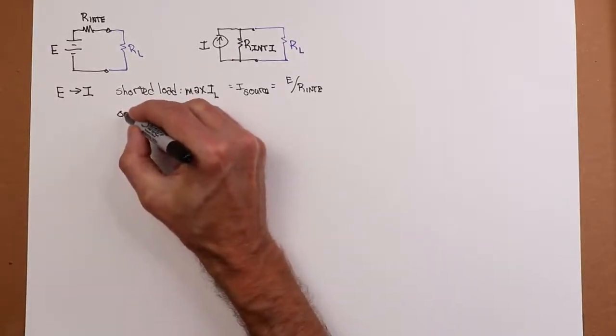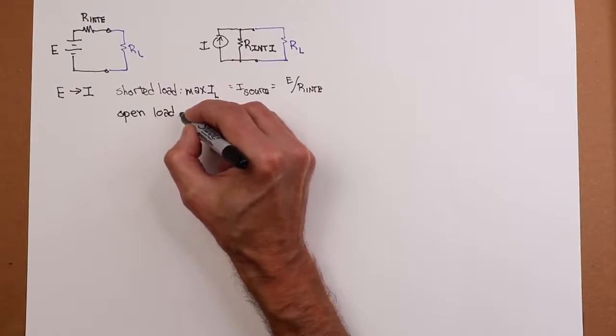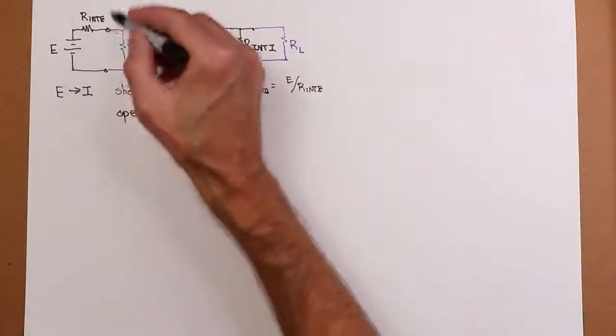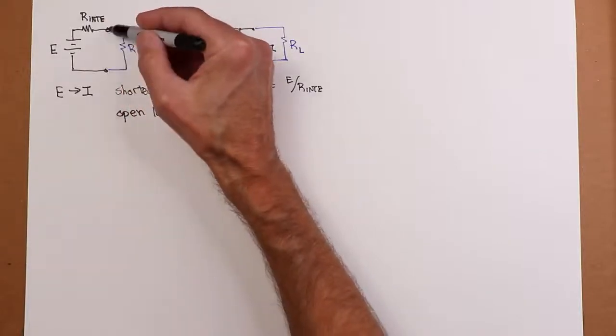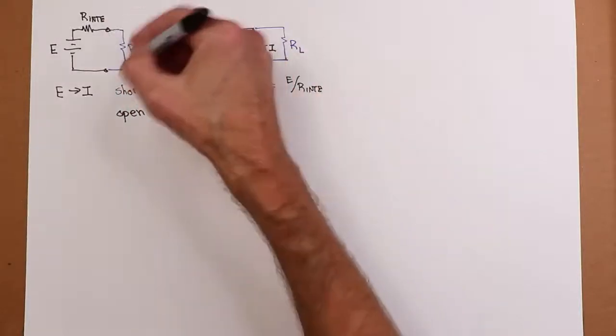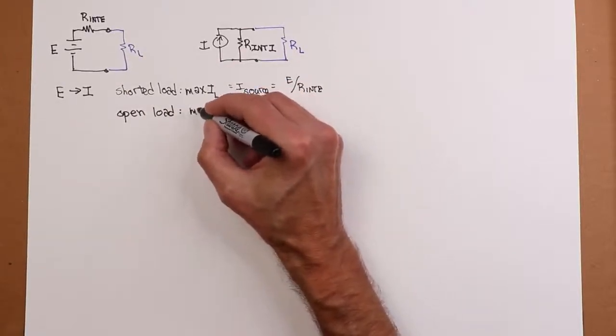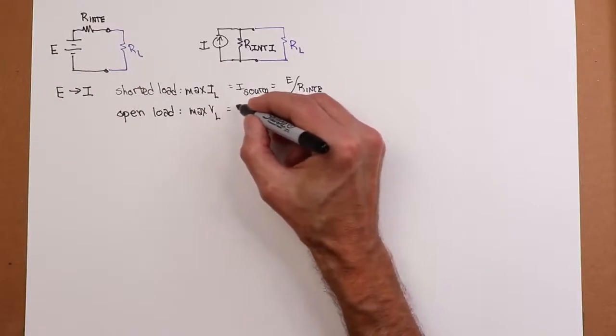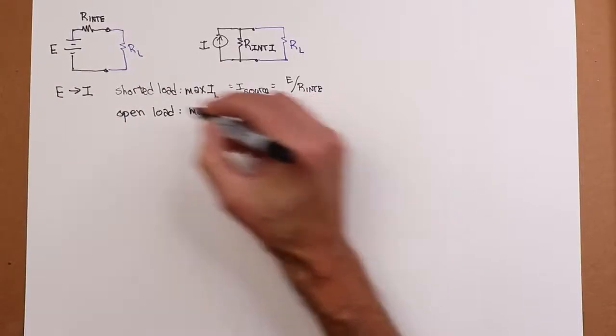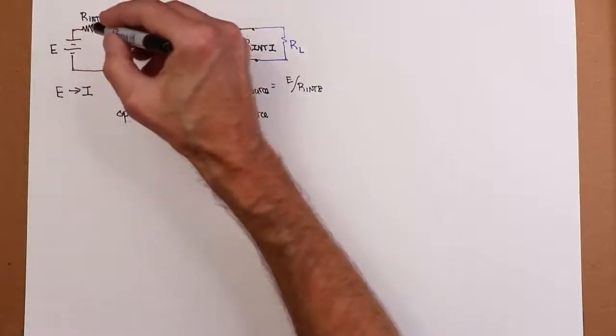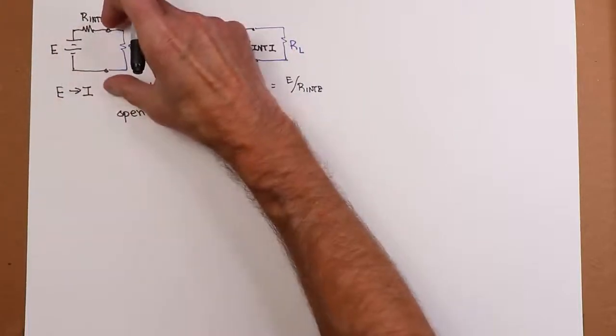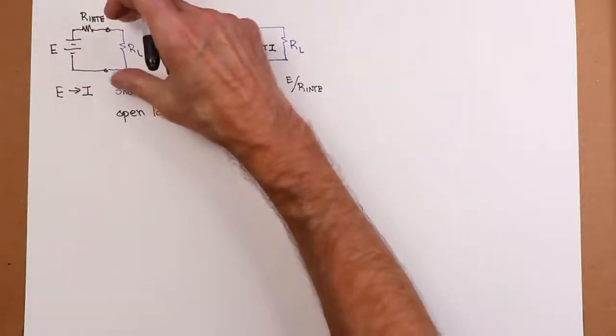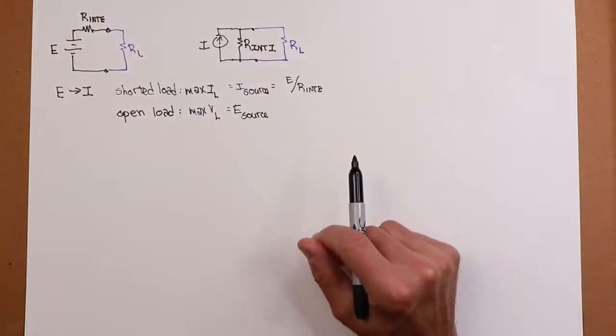Now consider the open case. If I open this up, there is no path for current flow. That means there's no drop across R internal E, which means that we must see whatever E is out here. So the load voltage VL produces the maximum VL. The load voltage VL would have to equal whatever E source is. So if that's a 9-volt source and this is an ohm, then when I open this up, all of that 9 volts should be appearing across the open. And you can kind of think of the open as just this humongous resistance value. And if you did a voltage divider, obviously it's all going to drop across the load.